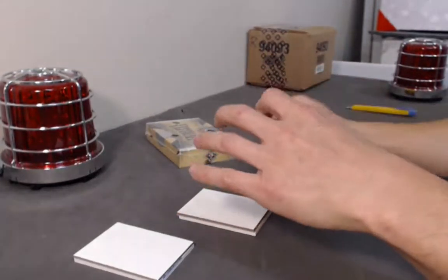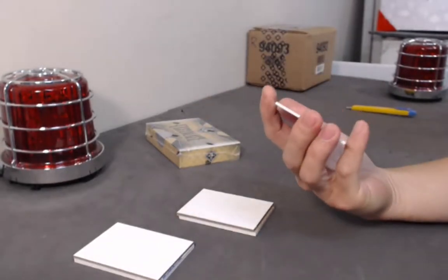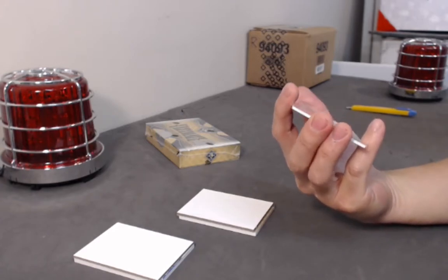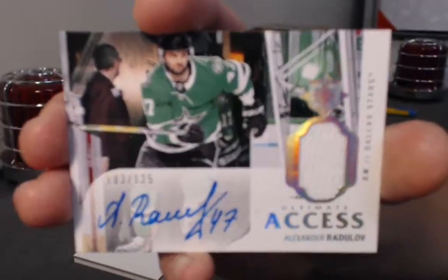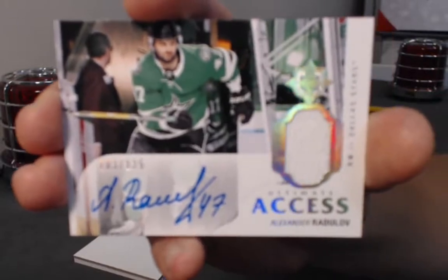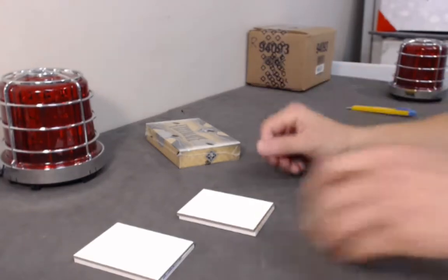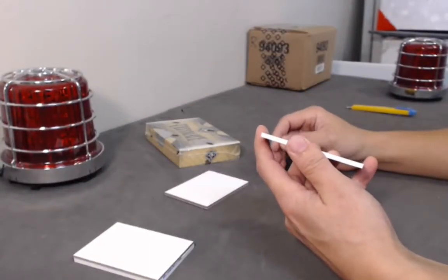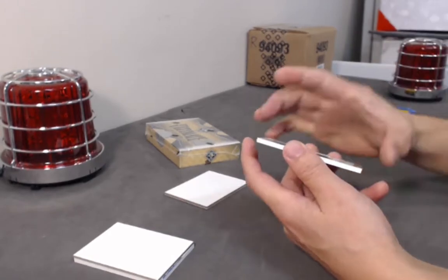What do we have here, Ultimate Access autographed jersey, I guess no patch, that's why it's numbered out of 125. From the Dallas Stars number 47, Alexander Radulov. Nice, autographed no patch. Well it's definitely a shield like I said, it's a 1 of 1. Toronto Maple Leafs huh, is that the team you're after? High on believing. Nice.